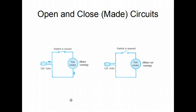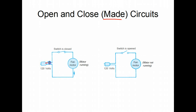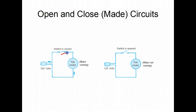Open and closed circuits. When you're talking about schematic diagrams and electrical circuits, there are open circuits and closed circuits, or made circuits. For any electrical circuit to operate properly, you must have a complete path for the current to flow — starting at one side of the electrical connection, flowing through the circuit to the load, and then back to the return side. That is called a made circuit or a closed circuit, meaning the switch that controls it is closed.